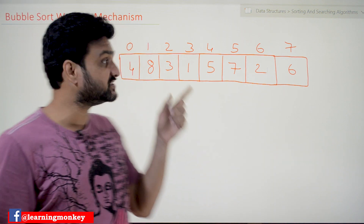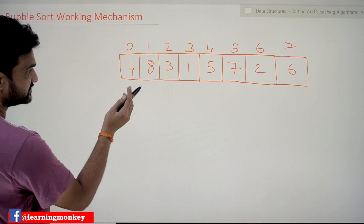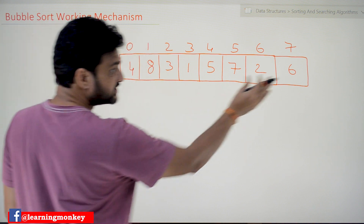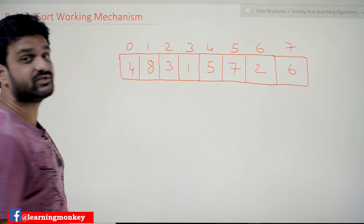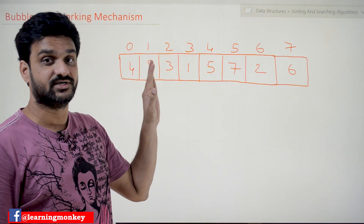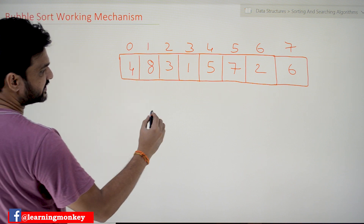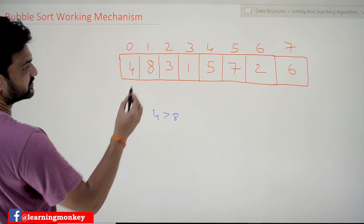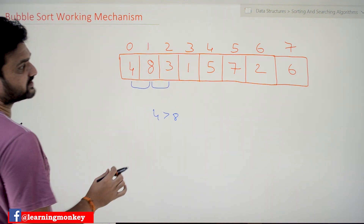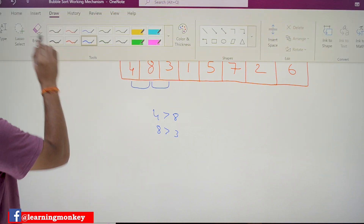Every pass means every iteration. In the first iteration, every time we compare all the elements. As we move from one iteration to another, we leave the last element, because the elements at the end are already in sorted order. Practically: is 4 greater than 8? No. Next, 8 and 3 are compared — is 8 greater than 3? Yes, it is true, so we swap them.